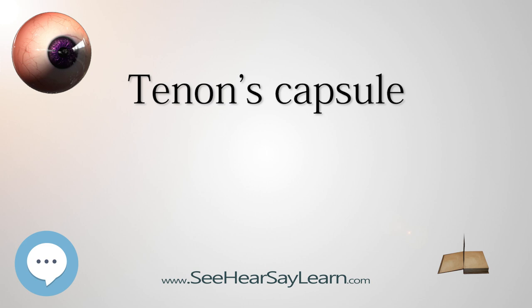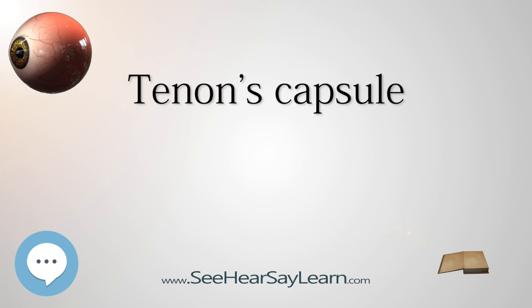The fascia bulbi, also known as the capsule of Tenon and the bulbar sheath, is a thin membrane which envelopes the eyeball from the optic nerve to the limbus, separating it from the orbital fat and forming a socket in which it moves. Its inner surface is smooth, and is separated from the outer surface of the sclera by the periscleral lymph space.